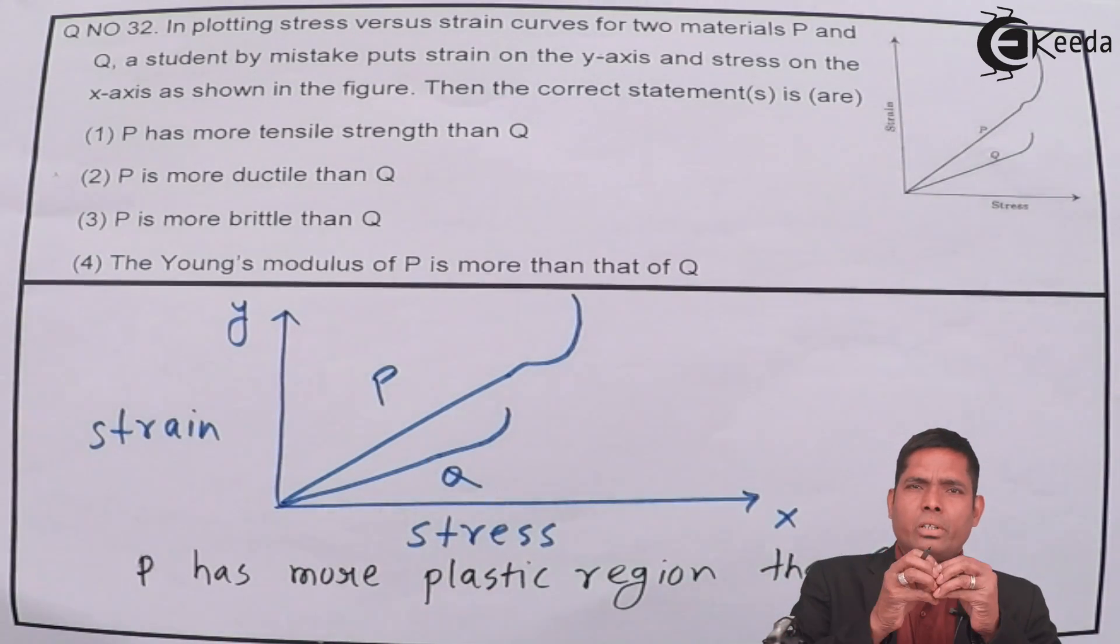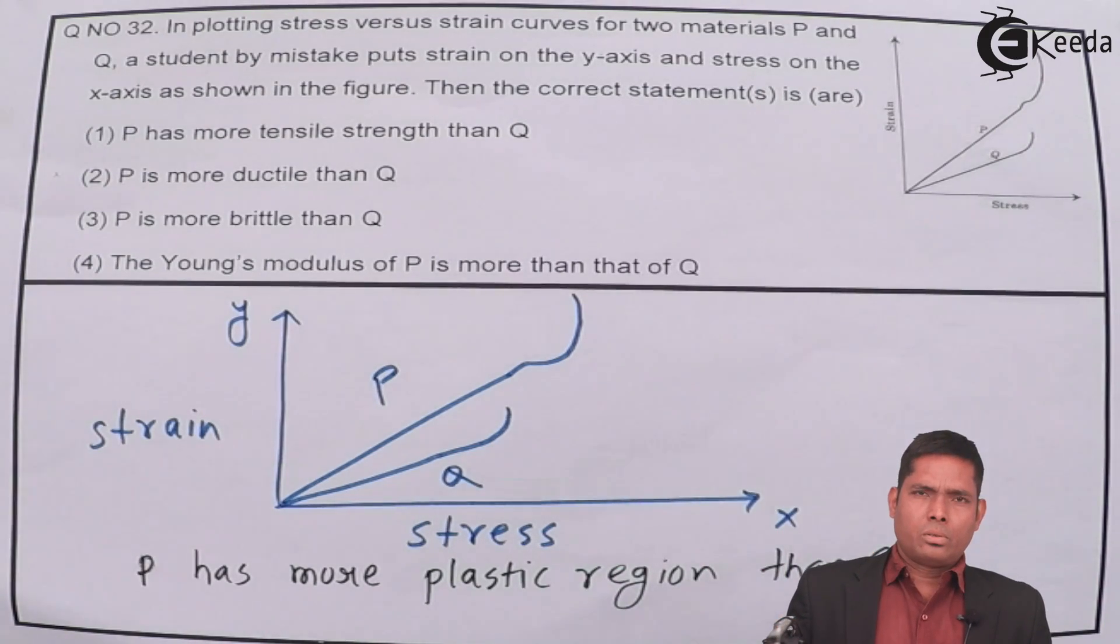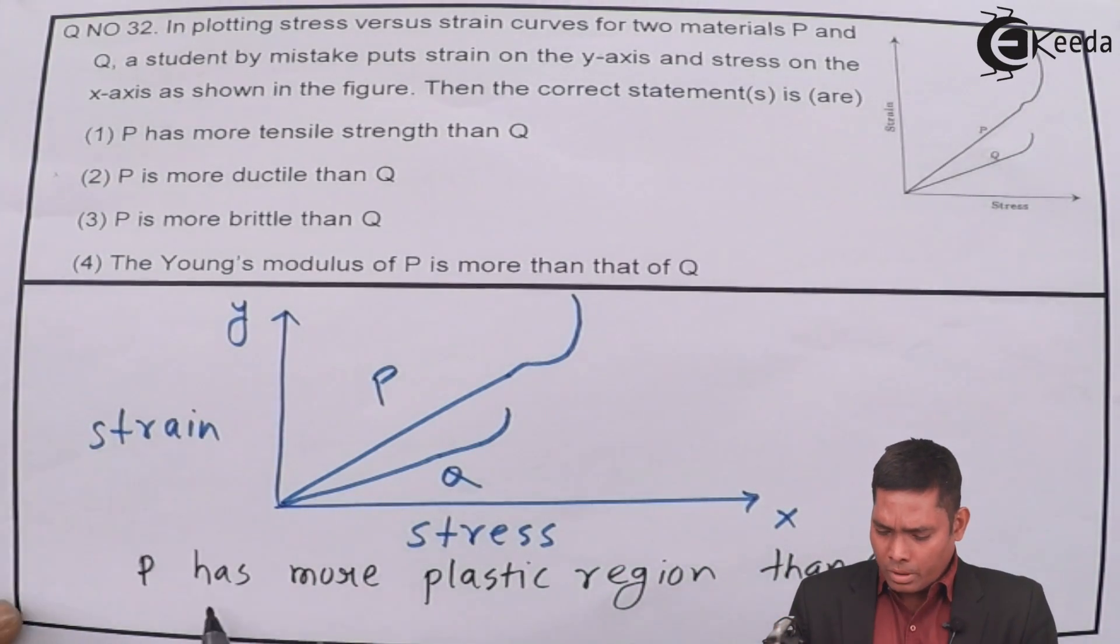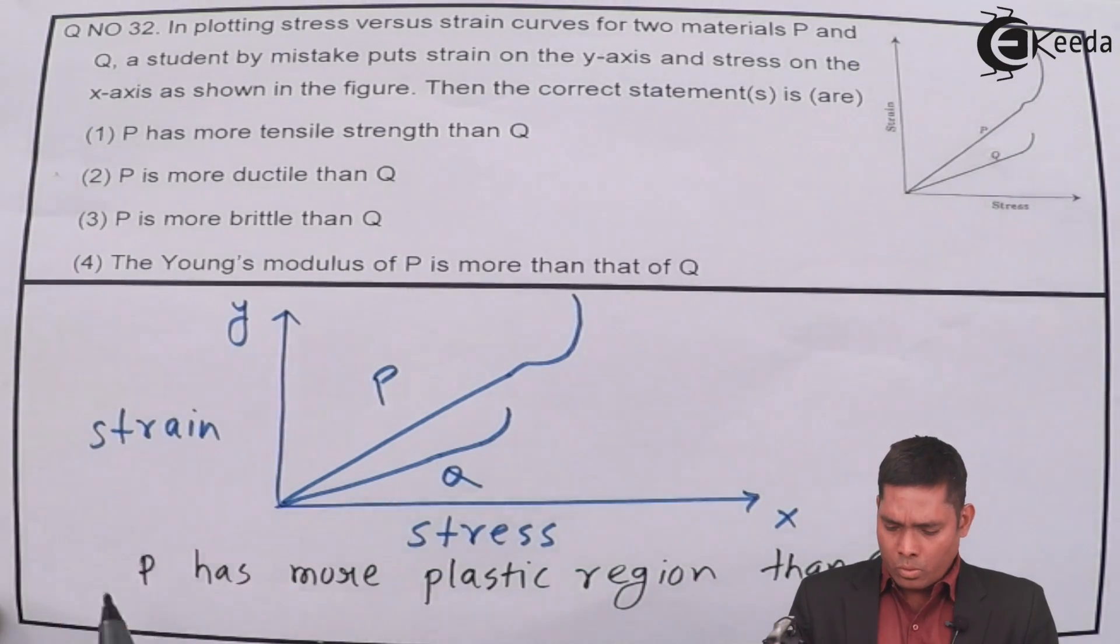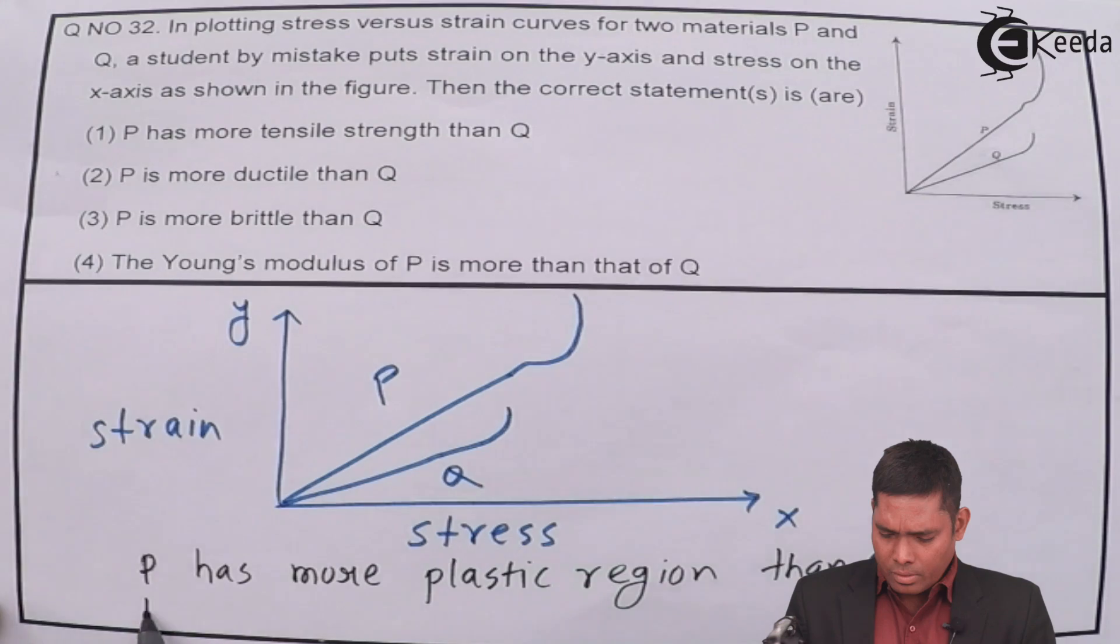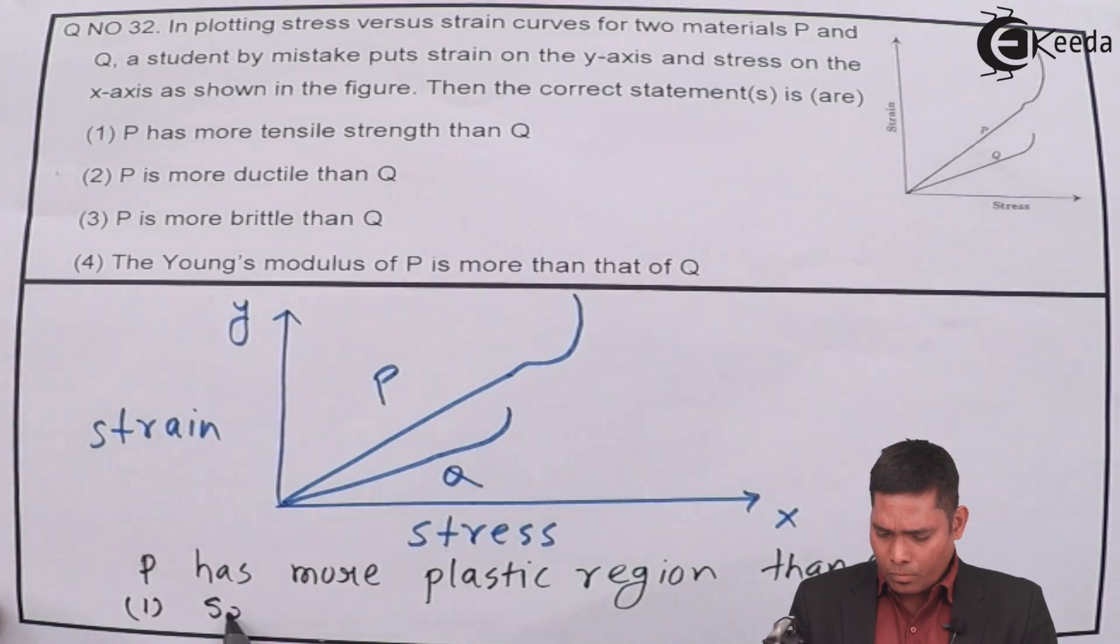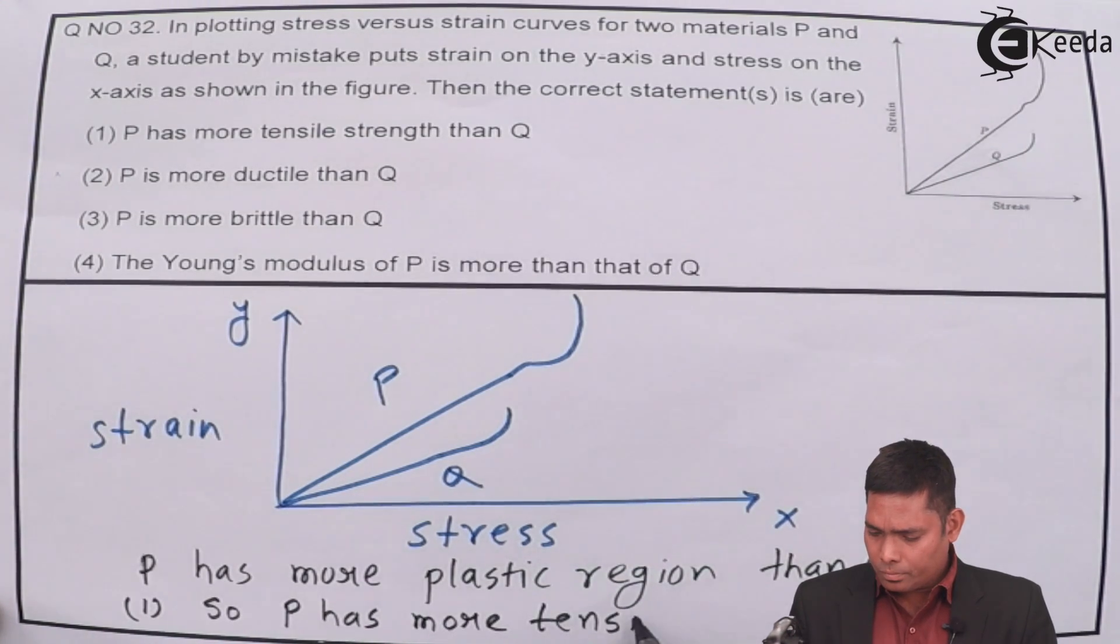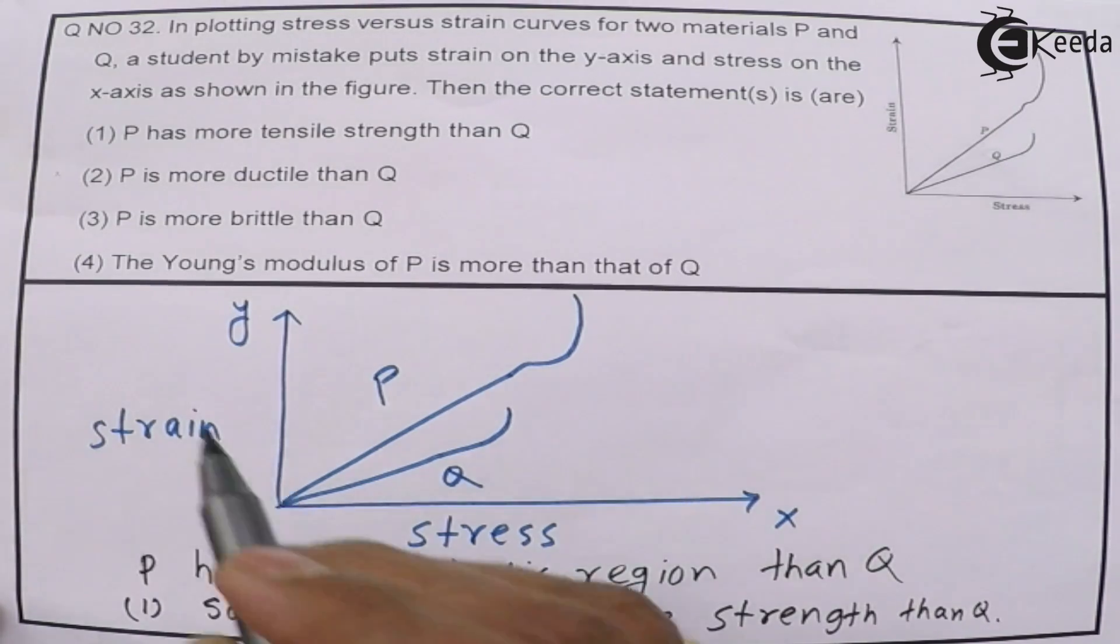The more tensile strength, the greater will be the plastic region. So therefore, because P has more plastic region than Q, option one is correct, which is tensile strength more than Q. This option is correct.